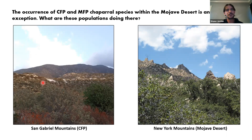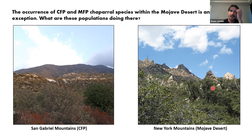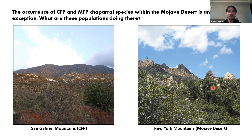The occurrence of these species in the Mojave Desert is really exceptional. We can compare typical chaparral in the local San Gabriel Mountains to chaparral in a place like the New York Mountains in the Mojave Desert — there are similarities, but it's still a remarkable phenomenon to have isolated populations of chaparral way out in the middle of the desert.